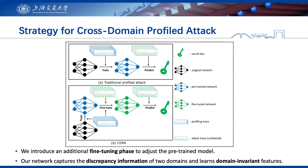Fine-tuning is a widely adopted technique in transfer learning for deep neural networks, where a few rounds of training are applied to the pre-trained model's parameters to adapt them to a new task. A straightforward approach is to take a pre-trained network and then train parts of its parameters using data from the target domain. However, in a realistic side-channel attack scenario, there are no labeled traces measured from the target device. So, in our strategy, the inputs of the fine-tuning phase are the original profiling traces with known labels and a limited number of unlabeled traces measured from the target device.